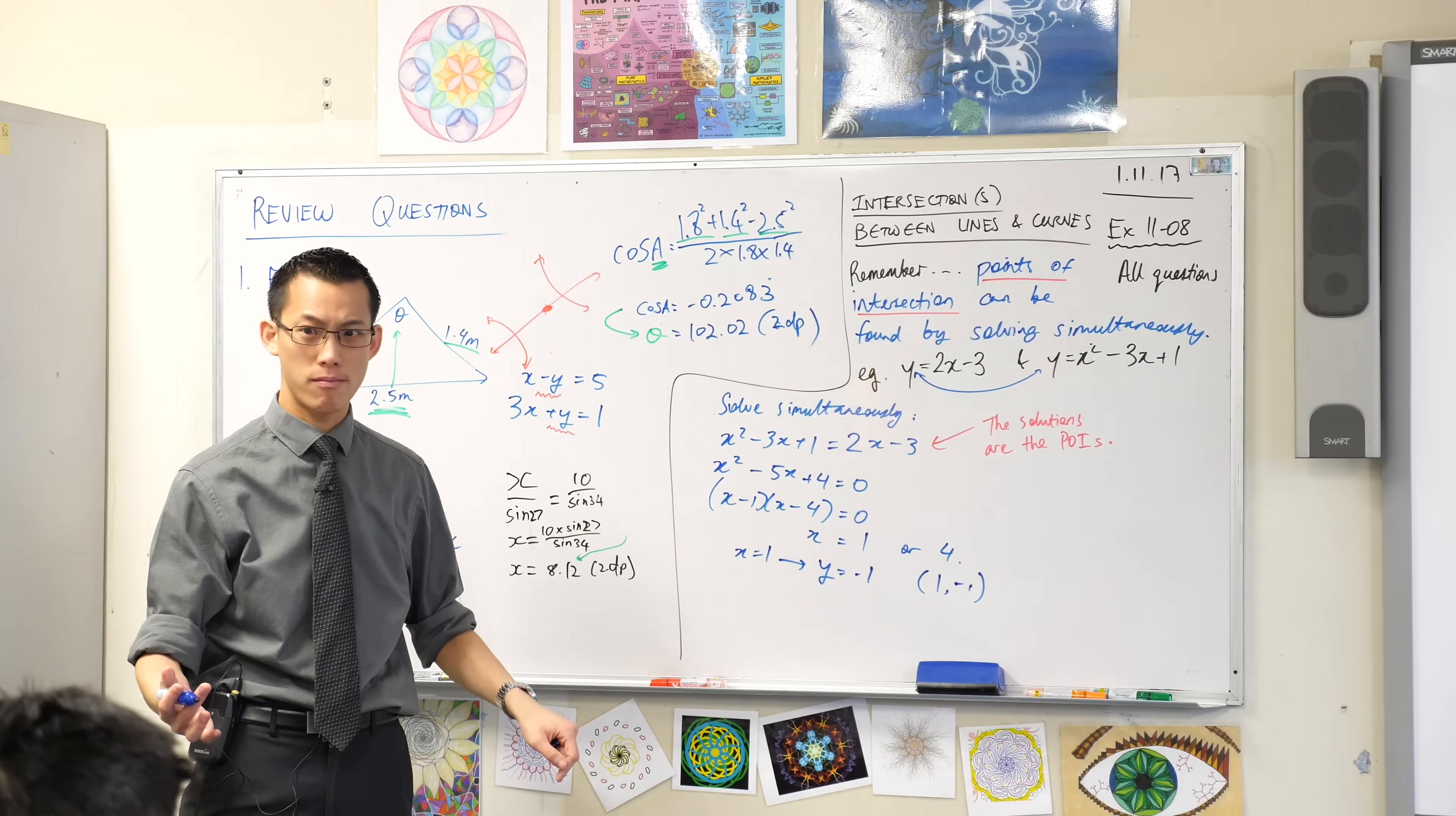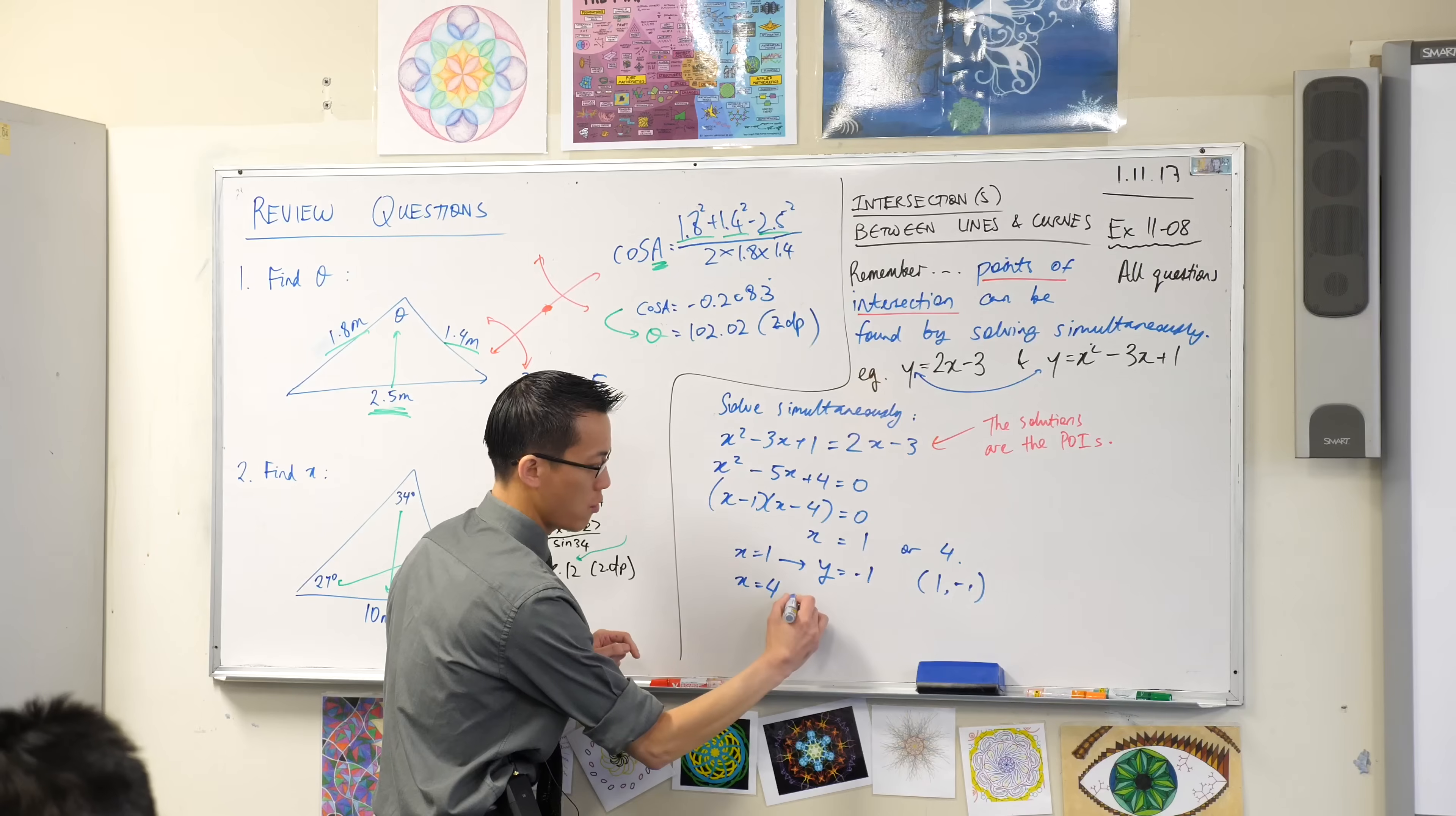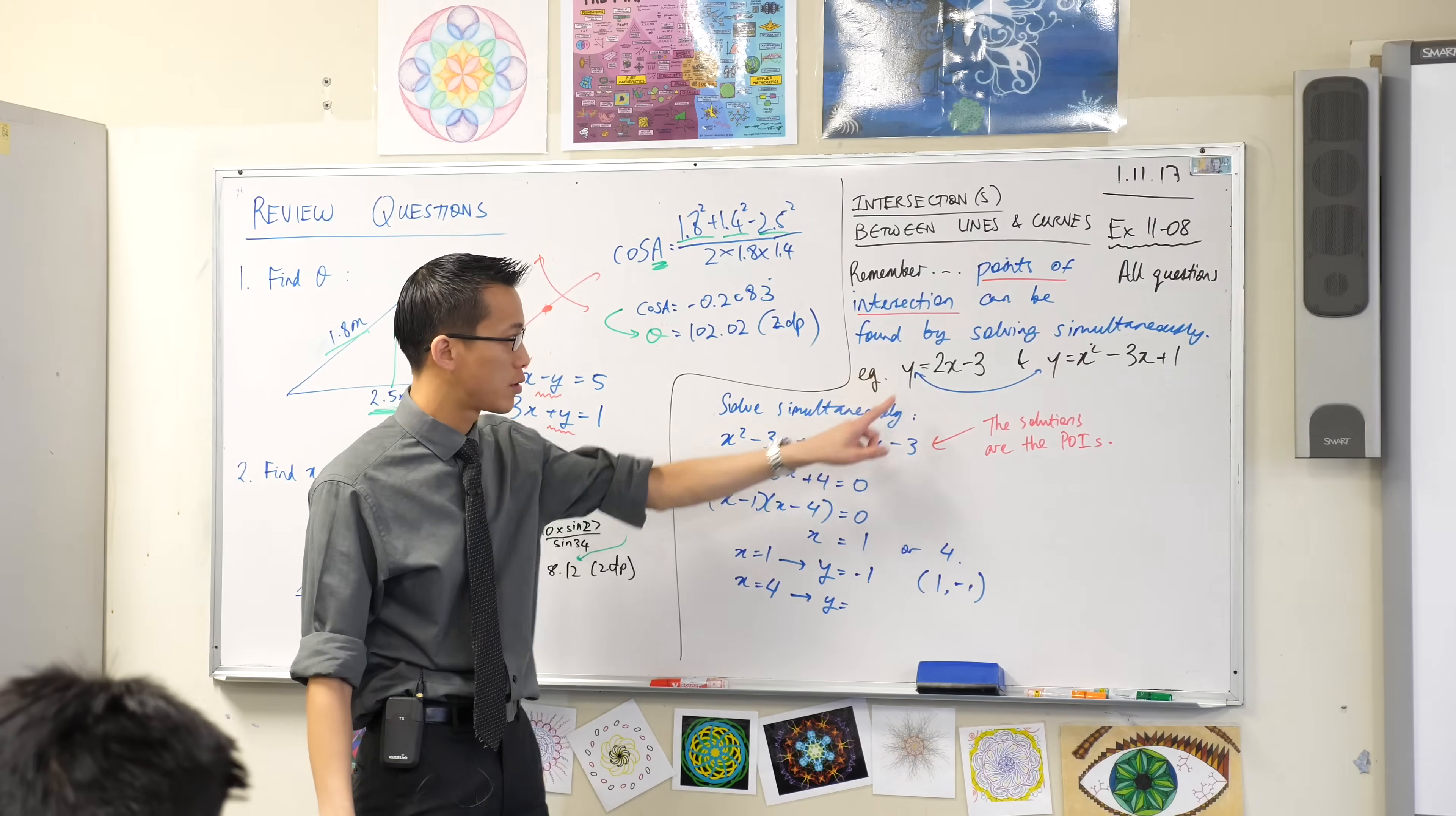It's not the only one though, right? There's the second one. When x equals 4, y is equal 2. I'm going to go straight back to that first equation because it's still the easiest one.